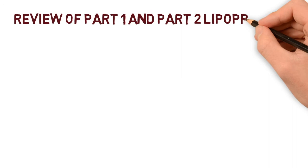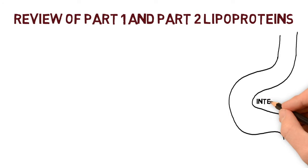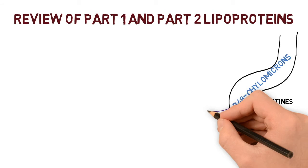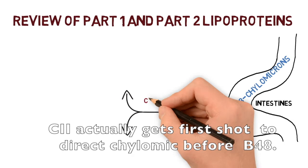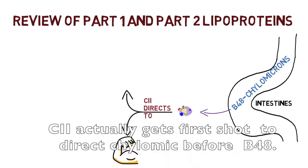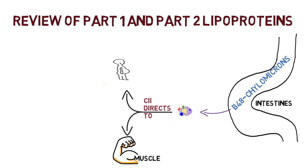Let's take a step back and review parts one and two of lipoproteins. We have the intestines with B48 attached to chylomicrons. When B48 comes in contact with the liver, it facilitates uptake of the chylomicrons. We also have ApoC2 and ApoB proteins on the chylomicron.